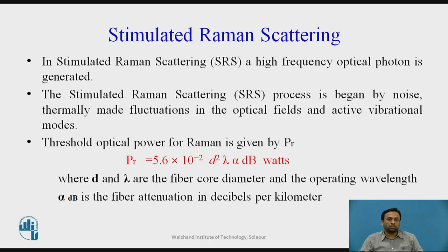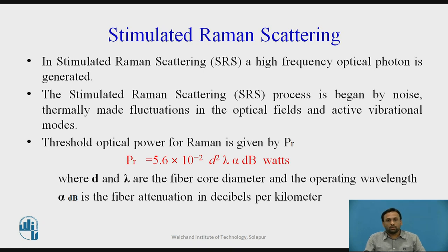In summary, scattering is divided into linear and non-linear types. Linear scattering includes Rayleigh scattering (when density fluctuation size is less than one-tenth of the operating wavelength) and Mie scattering (greater than one-tenth). Non-linear scattering includes Stimulated Brillouin Scattering and Stimulated Raman Scattering, caused by acoustic vibrations and photon generation. Next, we will solve examples on calculating Rayleigh scattering.